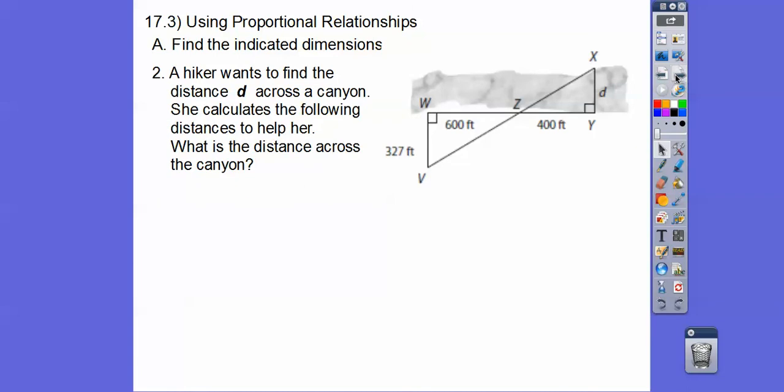I mean, I can keep doing these forever, but same sort of thing. So a hiker wants to find the distance across a canyon. This distance, she wants to find this distance across the canyon. And so what she does is she calculates from these two points, a nice perpendicular segment is 400 feet. And then she does another perpendicular segment of—I'm not, sorry, not perpendicular. She keeps going straight and goes 600 feet and then does a perpendicular segment right here and does 327.